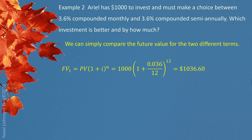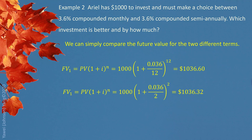We can simply compare the future value after one year to see the difference. If the interest is compounded monthly, after one year we get future value $1,036.60. If the interest is compounded semiannually, after one year we get future value $1,036.32. So the difference is $0.28. That tells us how much better.